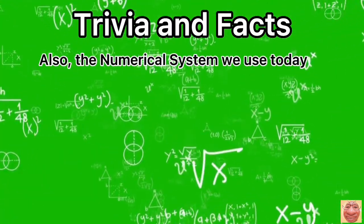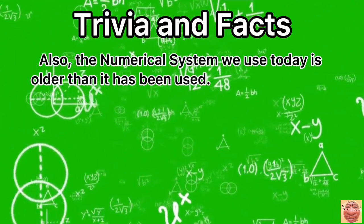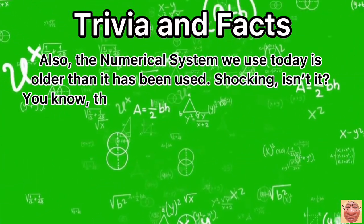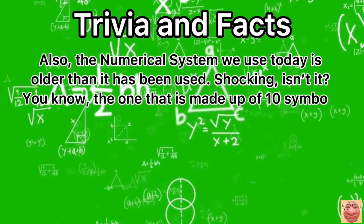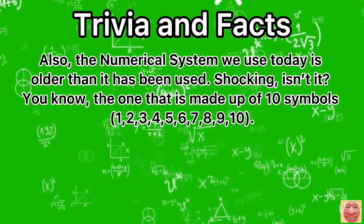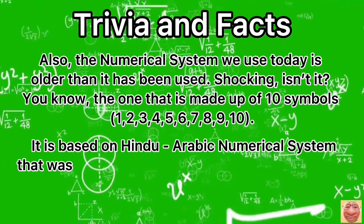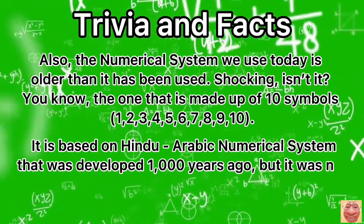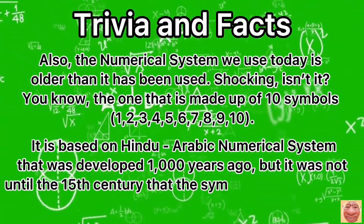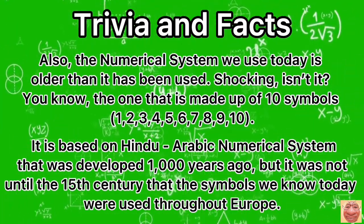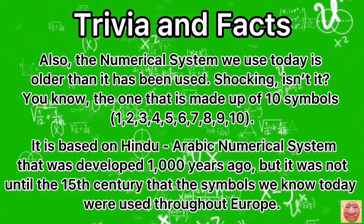Also, the numerical system we use today is older than it has been used. Shocking, isn't it? You know, the one that is made up of 10 symbols? It is based on Hindu-Arabic numerical system that was developed 1,000 years ago. But it was not until the 15th century that the symbols we know today were used throughout Europe.